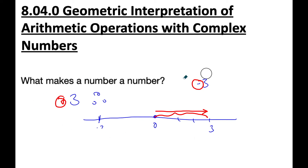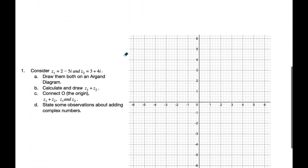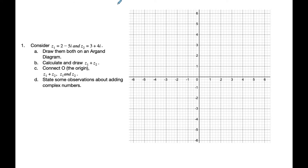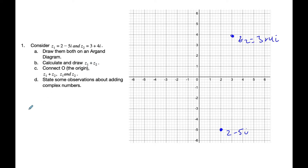On that note, let's consider this scenario here. I'm going to draw Z1, which is 2 minus 5i. So here is 2 minus 5i. And Z2 is 3 plus 4i. So here is Z2, which is equal to 3 plus 4i.